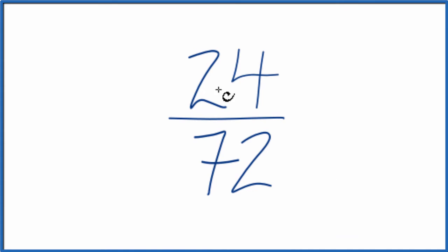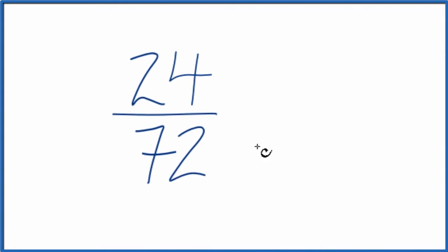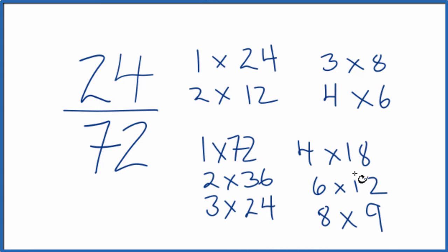Let's start out by looking at the factors of 24 and 72 and finding a common factor, something that goes into 24 and 72. So these are the factors. And what we need to do is find the greatest common factor between 24 and 72.